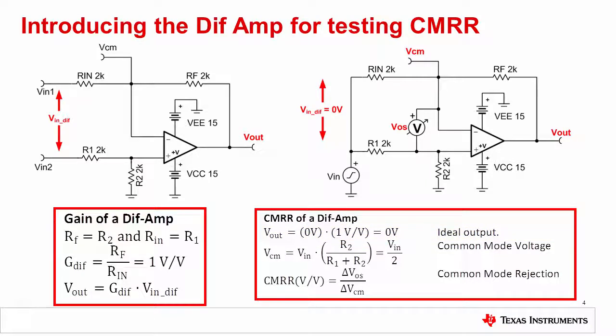As the input signal changes, so does the common mode voltage on the op-amp. In this example, the common mode voltage is equal to the input source divided by 2.